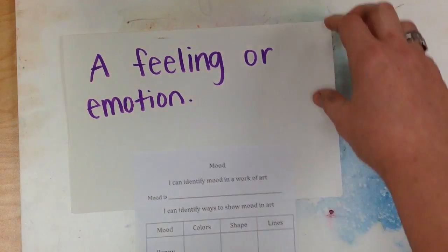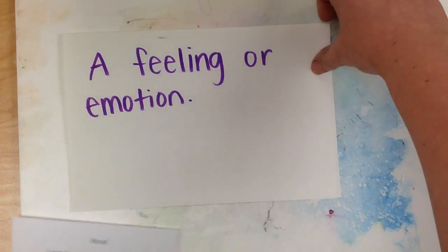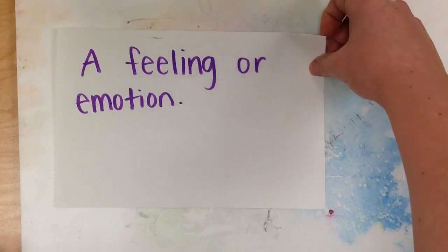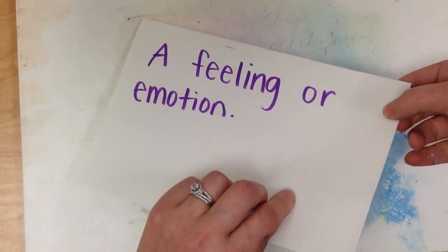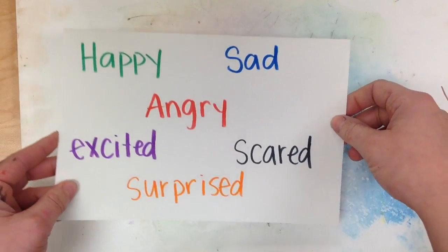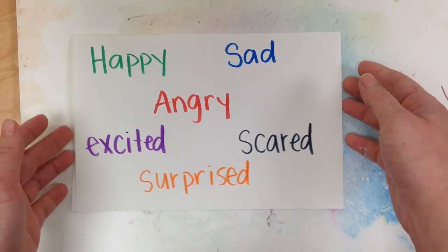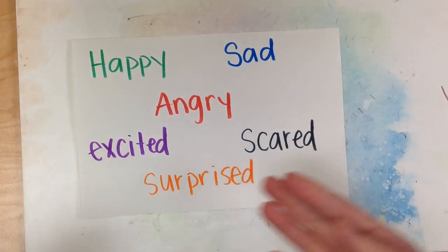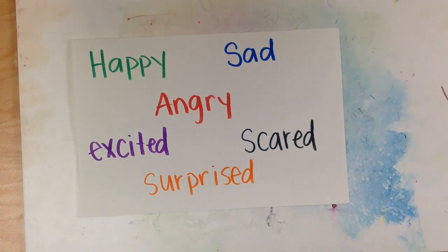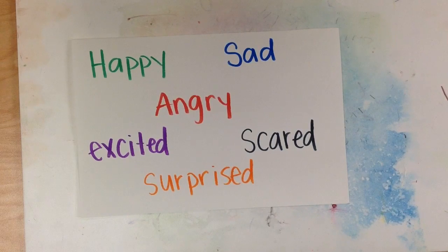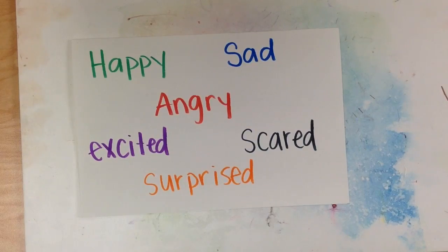Now there can be all different kinds of feelings or emotions or moods. You could be in a happy mood, sad, angry, excited, scared, surprised, and many many more. These are all examples of mood.